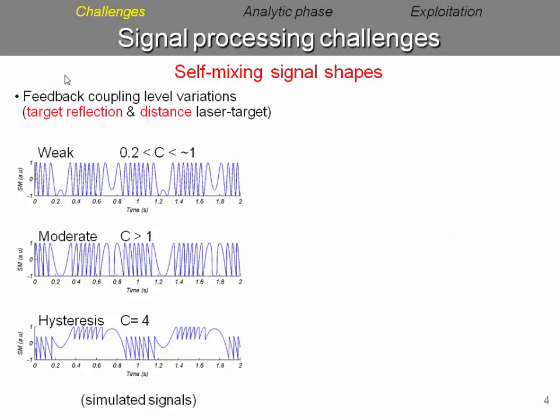In our case, for values of C lower than 1, we have weak feedback characterized by an almost sinusoidal shape. For values bigger than 1, we have the sawtooth shape of the signals. When we have higher values of feedback, we have the hysteresis phenomenon, which affects the zero-crossing of the fringes.